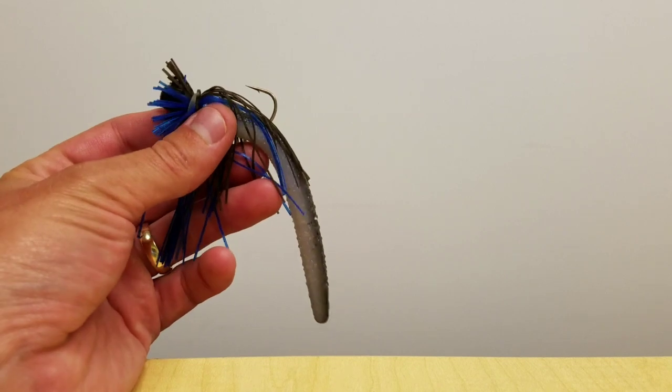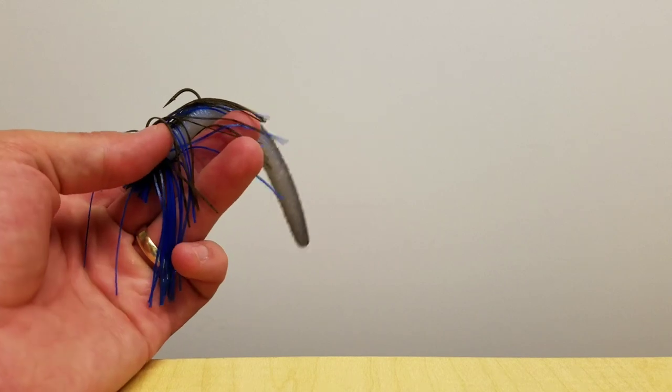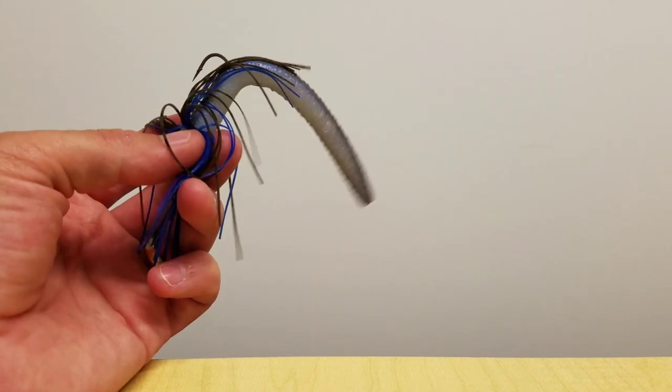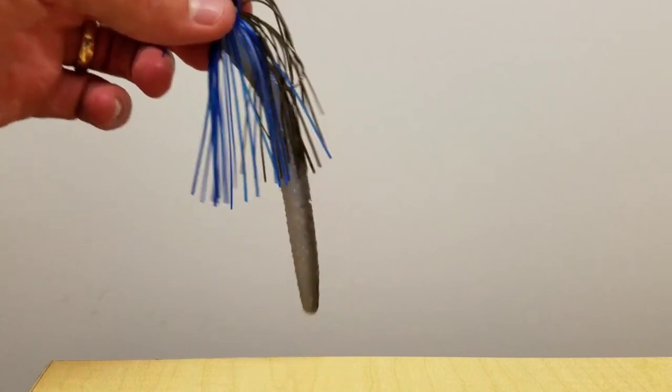How about this? This is a 3-0 hook on a Ned Rig with a 4-inch Ned Rig bait. Still a LASTEK. Stands up. Great action. Give it a shot if you haven't already.